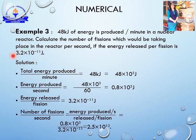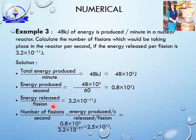Given: total energy produced per minute is 48 kilojoules, which equals 48 × 10³ joules (kilo = 10³). The second piece of information: energy released per fission is 3.2 × 10⁻¹¹ joules. Per fission, this much energy is released.